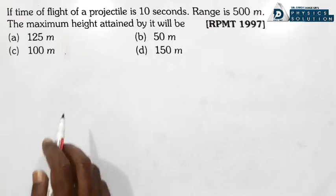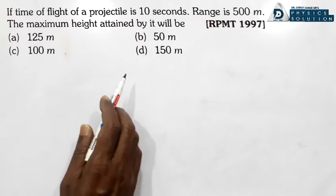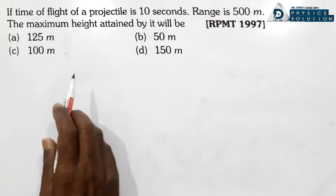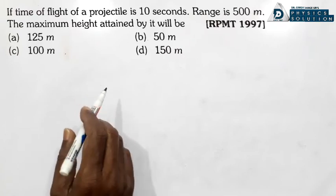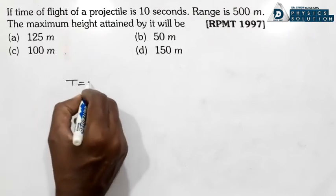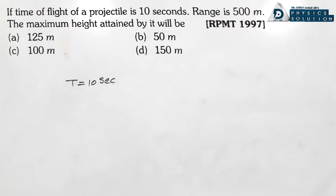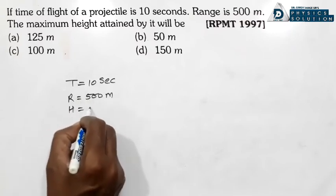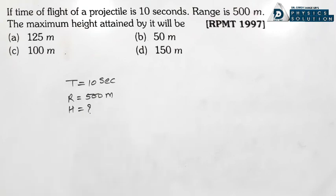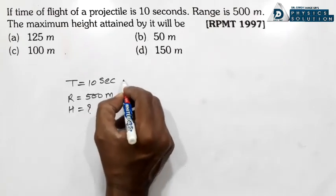Next problem: If time of flight of projectile is 10 seconds and range is 500 metres, the maximum height attained by it will be. Time of flight T = 10 seconds, R = 500 metre, aur hume height nikalni hai.